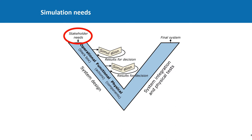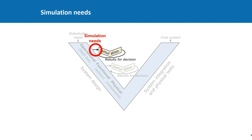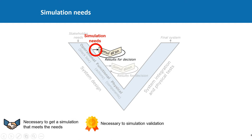We always say that the development of the system must start with clear stakeholder needs. One of the main stakeholders is, of course, the user. We need to know what the users will do with the system — if it's a car, is it to commute in dense cities or is it to go on holidays? Similarly, the simulation needs are also an extremely important starting point for the simulation. That's how the simulation can meet the needs, and that's also how we can validate that the simulation meets the needs.